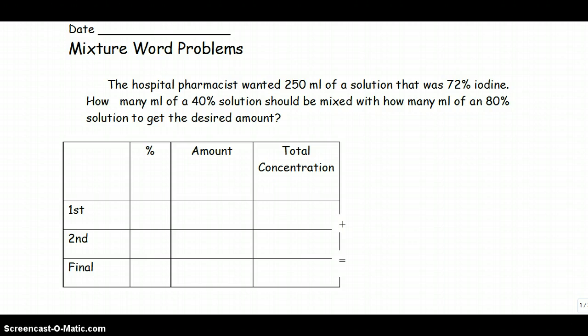So first thing I have to do is write down what I know. The hospital pharmacist wanted 250 milliliters, so that's what they want to end up with. That's 250 milliliters of a solution that was 72% iodine. So they want the final percentage to be 72%.